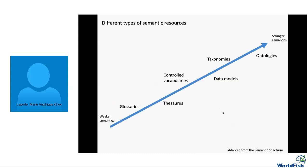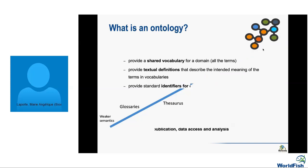As we can see in this picture, there are different types of semantic resources: ontologies, thesauri, controlled vocabularies, taxonomies, data models, and glossaries. Most of the time all of these are referred to as ontologies. The difference between them is about semantics — how they are built — ranging from weak to strong semantics. If you're a normal user you don't need to worry about this; they can all be referred to as ontologies. If you read literature mentioning controlled vocabularies, thesauri, or ontologies, they can all be gathered under the broad term 'ontology.'